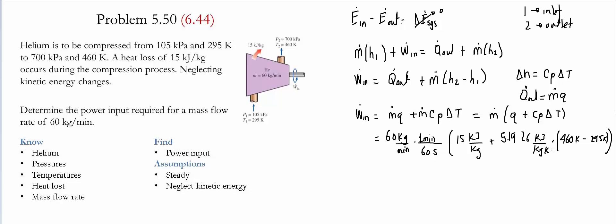Notice that if we cancel the units, Kelvin and Kelvin cancels. Then we have kilograms and kilograms cancels. We've got minute and minute and then we're simply left with kilojoules per second, which is a unit of kilowatts.